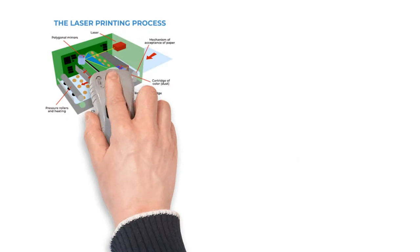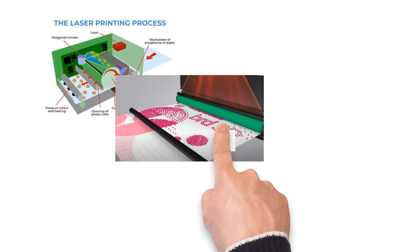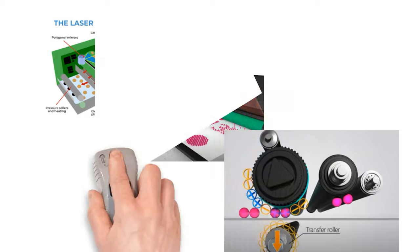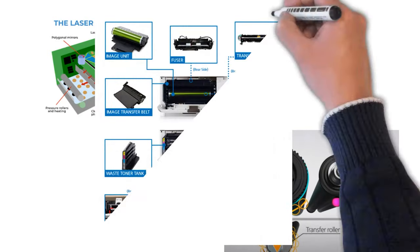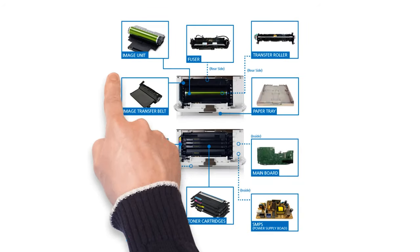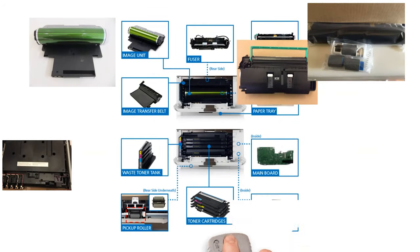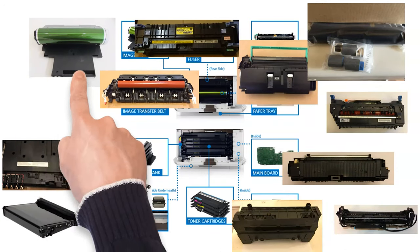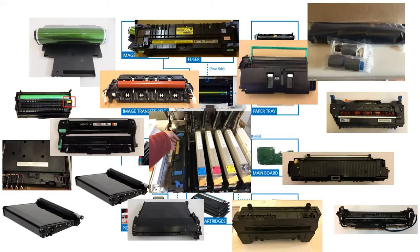Laser printers are intricate machines with multiple moving parts that work together to produce prints. Over time, these parts undergo wear and tear, similar to car tires, and eventually require replacement. As many of us are aware, these maintenance parts can be quite expensive, ranging from 50 to over 2,000 US dollars per part, and may even require on-site technician support for installation.